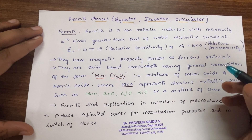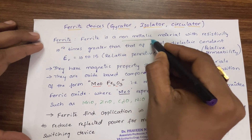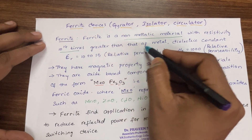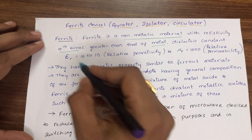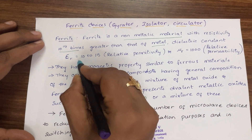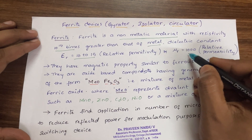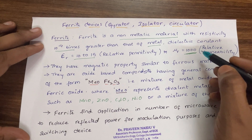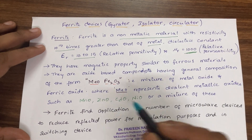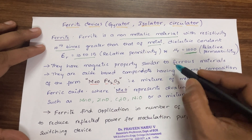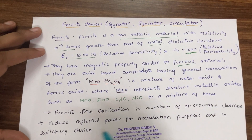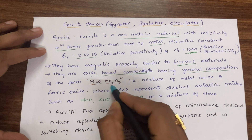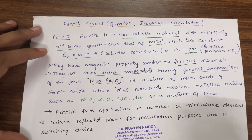Ferrite is a non-metallic material with high resistivity — 10 to the power 14 times greater than that of a metal. It has a relative permittivity of 10 to 15 and permeability of almost 1000. They have magnetic properties similar to ferrous materials and are oxide-based compounds with the general composition MeO·Fe₂O₃.